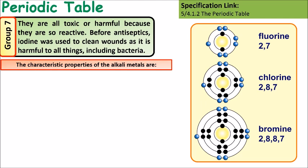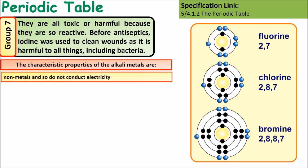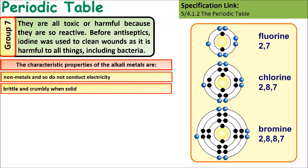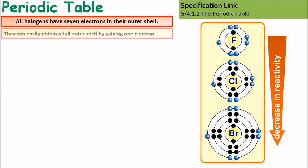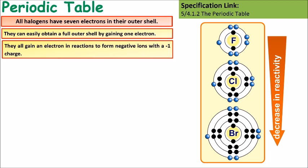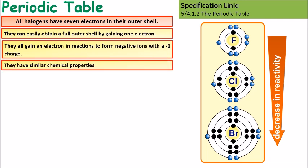Group 7 atoms are found in group 7 and all have 7 electrons in their outer shell. They're non-metals so they do not conduct electricity. They're brittle and crumbly when solid, poisonous and smelly, and they become darker in colour as you move down the group. Because they're in group 7 they only need one electron to fill the outer shell, so they're very reactive because they can readily grab that one electron. They all gain an electron in reactions to form negative ions, so they all end up with a charge of minus 1.